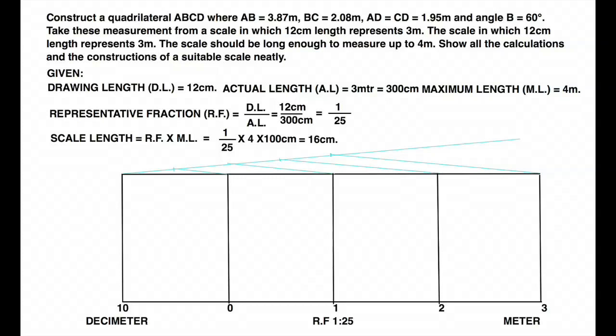Now in this we have to mark centimeter also. 3.87 meter. So we need to divide 0 to 10 into 10 parts. We will do marking 0, 2, 4, 6, 8, 10 and we will mark all these points down as well. 0, 2, 4, 6, 8, 10. We don't have to draw a straight line. We have to just mark the points.